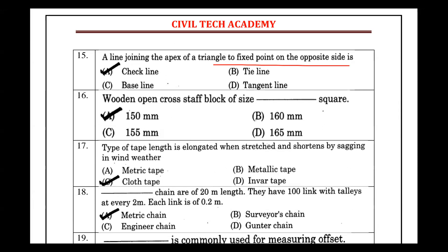If you want to check the line joining two points, you can check it. Next, the wooden open crossstaff has a wooden block size of 150 mm square.